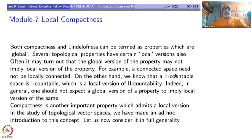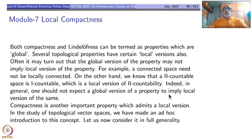On the other hand, first countability can be thought of as the local version of second countability, and second countability implies first countability. So don't jump to conclusions either way. In general, one should not expect a global version of a property to imply the local version of the same.